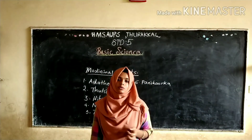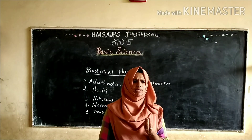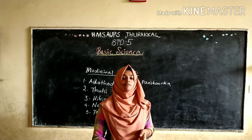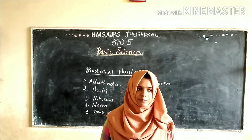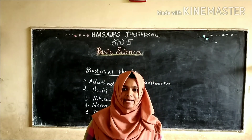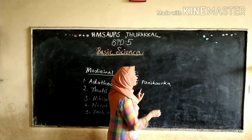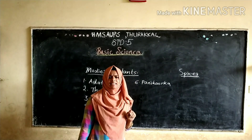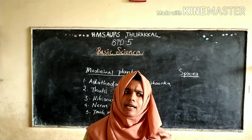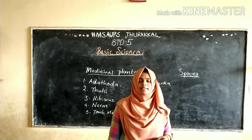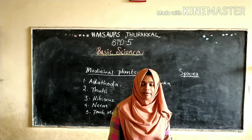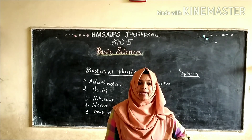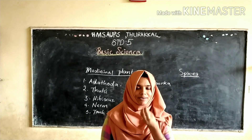Then we are going to look at some plants chosen as spices for food items — for giving more taste. For example, spices. Spices are also medicinal plants, but we choose spices like pepper, cloves, turmeric, and ginger to get the best taste in our food.